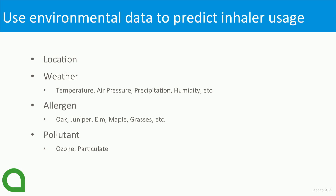We get pollutant data from airnow.gov, which I have to scrape because it's not available on a simple API — very annoying, but welcome to open source. I get ozone measures and particulate measures from there. For the allergen data, that's available at pollen.com — all kinds of pollen data, different types of grasses, maple, elm. We try to see which of these data points have an impact on his inhaler usage.